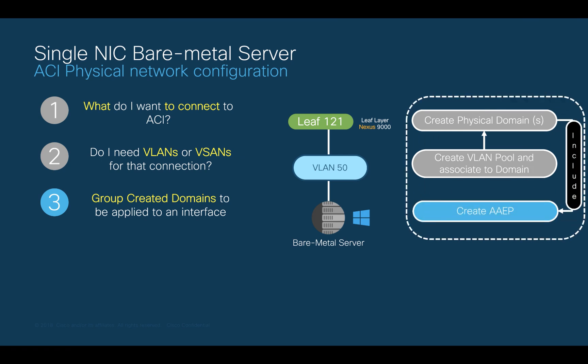In this case, we have one physical domain that will be assigned to the AEP we will create. We will assign this AEP to an interface in one of the next steps. Remember, we may have more than one domain attached to an AEP, as covered in the previous chapter. The AEP will group the domain and its VLANs so that we can later assign it to a specific interface.